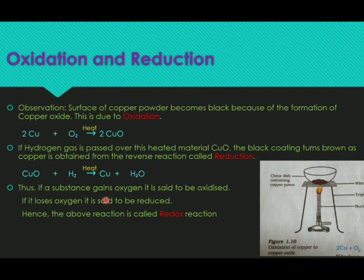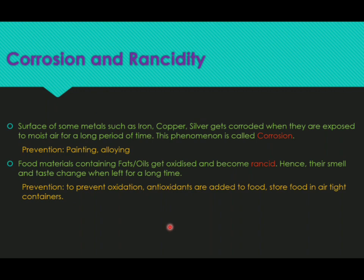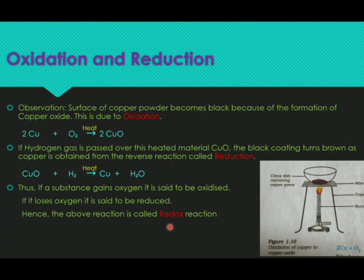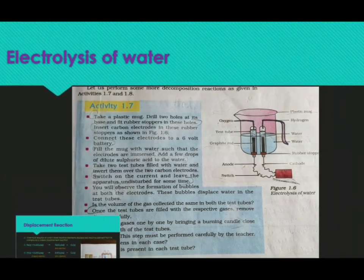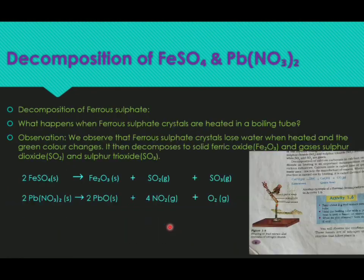To summarise: if a substance gains oxygen, it is said to be oxidised; if it loses oxygen, it is said to be reduced. These are redox reactions. The types of chemical reactions we have covered are: combination, decomposition (thermal, electrolytic, photolytic), electrolysis of water, displacement, double displacement, and oxidation-reduction.